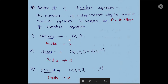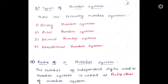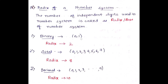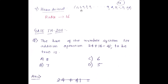For example, the binary number system has only zero and one, so the radix is two. Octal has digits zero through seven, so the radix is eight — there are eight independent digits. Decimal goes from zero to nine, so the radix is ten. Hexadecimal has zero to nine and A to F, giving a total of 16 independent digits, so the radix is 16.